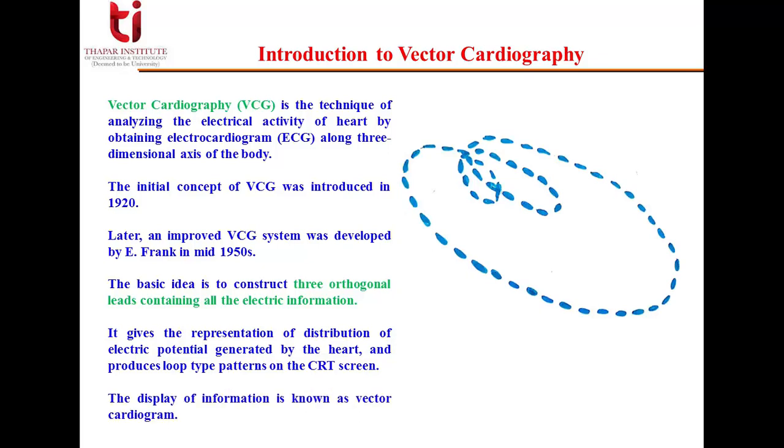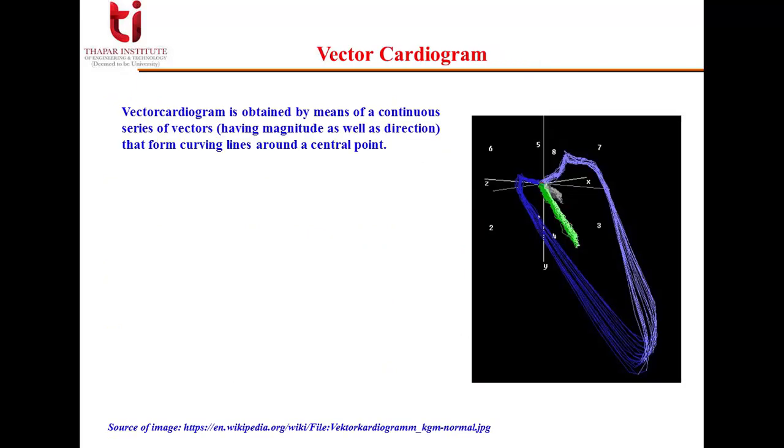The display of information is known as Vector Cardiogram. Vector Cardiogram is obtained by means of a continuous series of vectors, that means it will have magnitude as well as direction, that form curving lines around a central point.